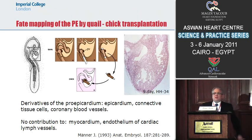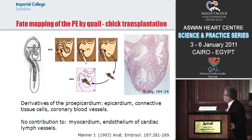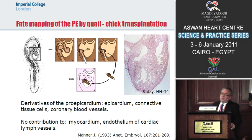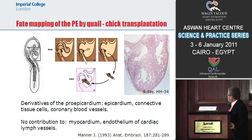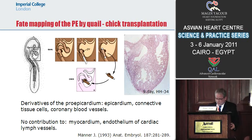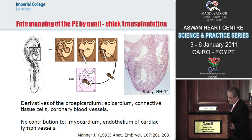To establish the fate of the different cells, one can do a cell transplantation experiment — a quail-chick transplantation — by taking the proepicardium from a quail, transplanting it into a chick, and detecting the quail cells in the transplanted embryo. You can see all these brown dots, which are the labeled derivatives of the proepicardium, and you can see this is quite an extensive contribution, with cells migrating into all sorts of areas of the developing myocardium.